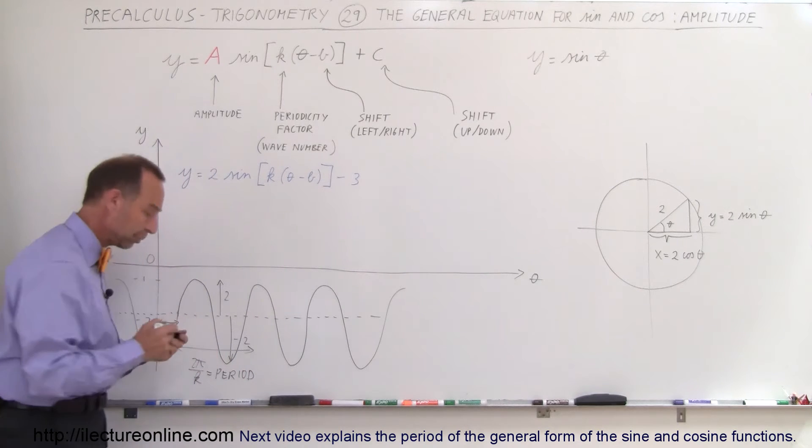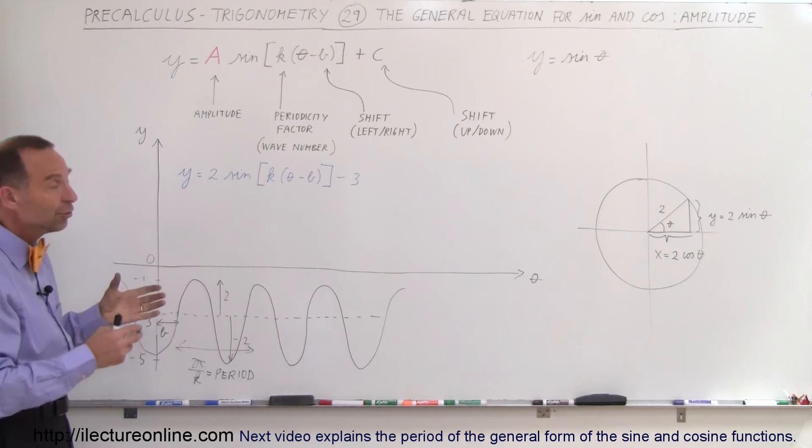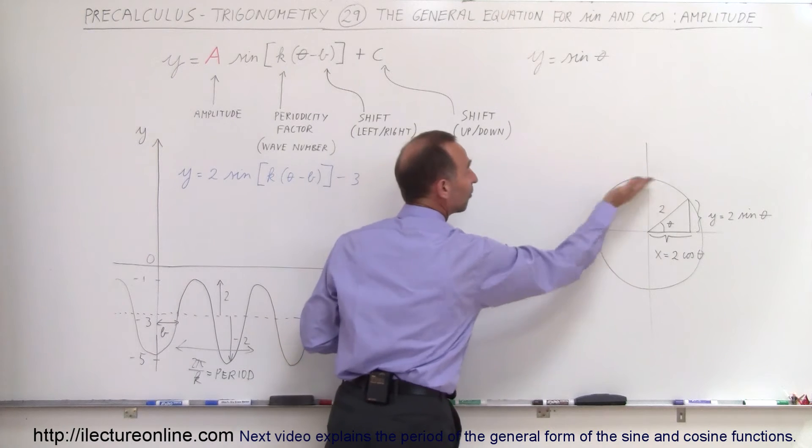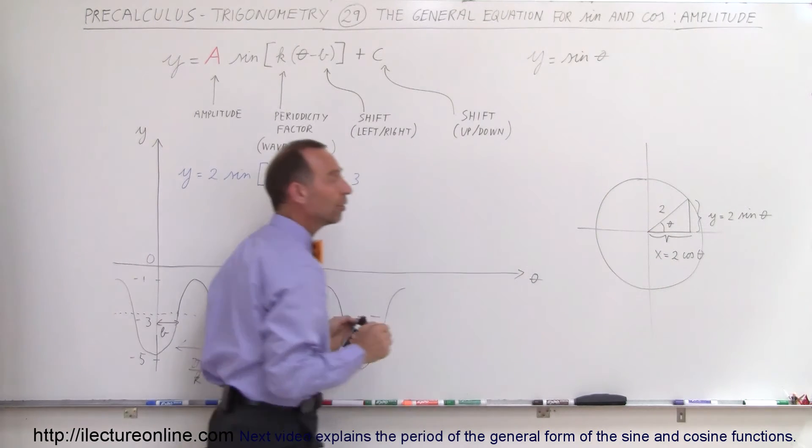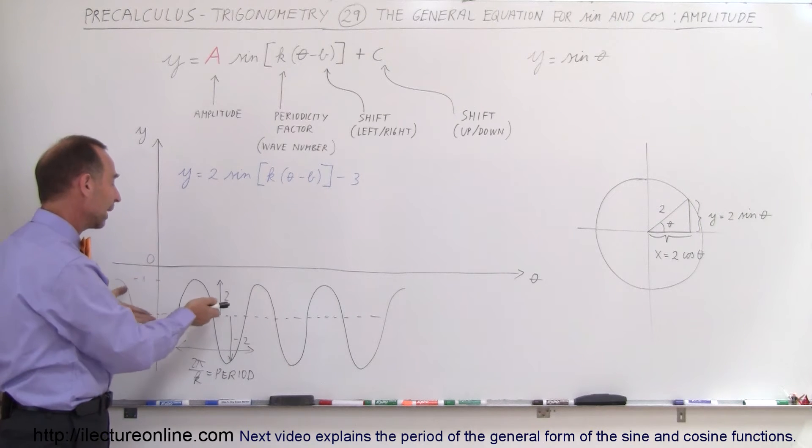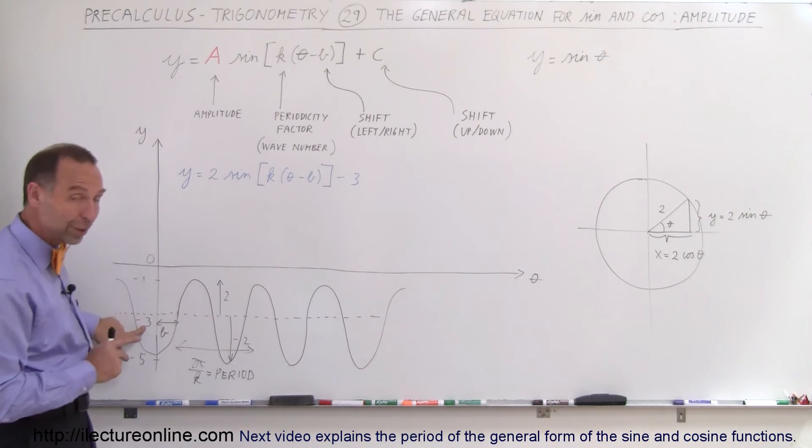But what we're interested in here is the amplitude. And notice that the function never becomes positive, even though when you go around the unit circle, half the time you should be above 0, the other time below 0. So even though there's an amplitude there, it doesn't mean that the value of the function will ever become greater than 0 because in this case it's been shifted downwards 3 units.